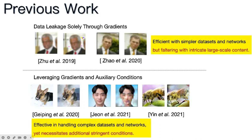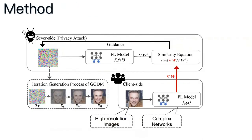The performance of privacy leakage attacks is still not satisfactory in the realm of federated learning, which leads to a fraudulent sense of security. In our study, we focus on enhancing the efficacy of privacy attacks by optimizing gradient-based methods that rely solely on gradients for complex networks and high-resolution images in federated learning.